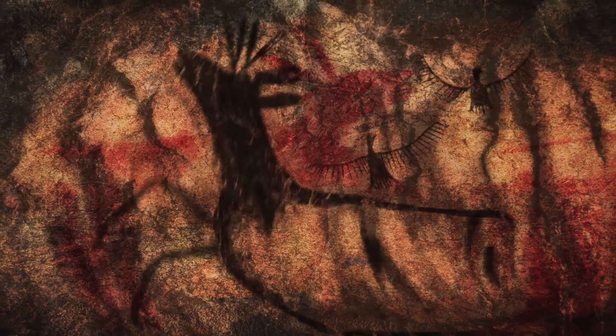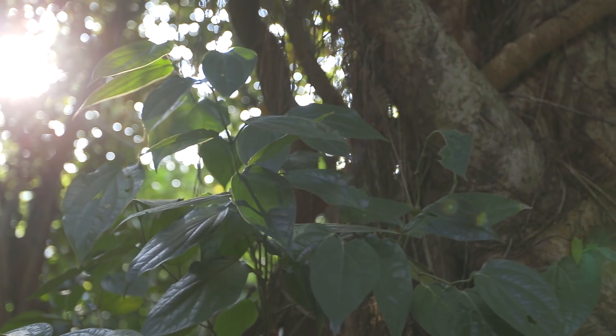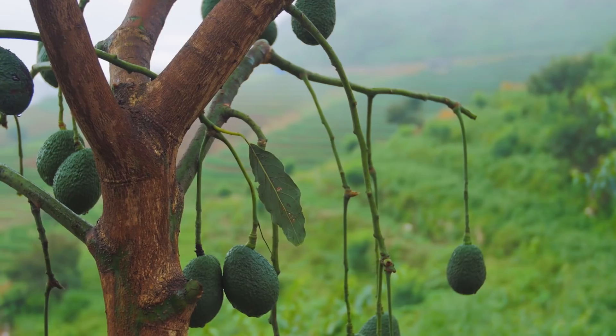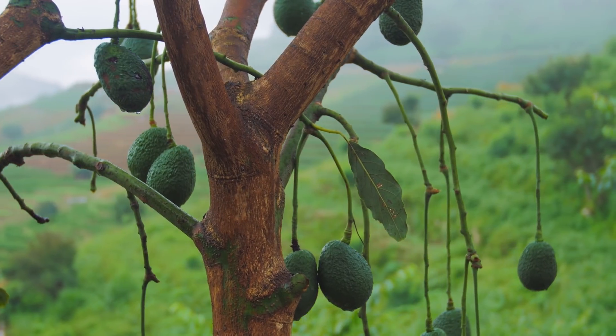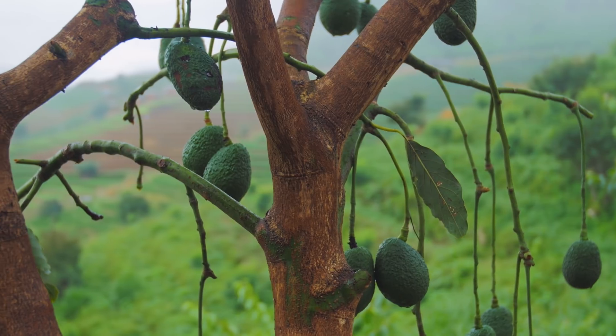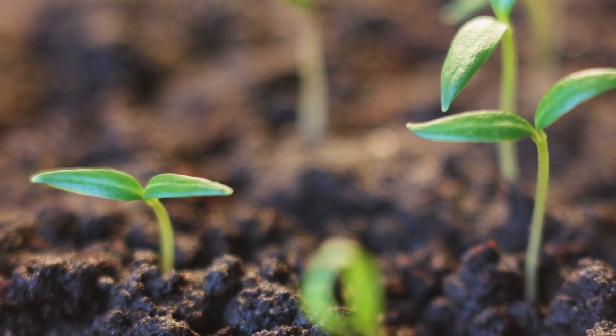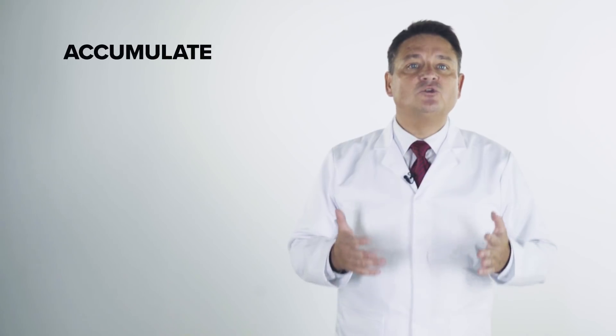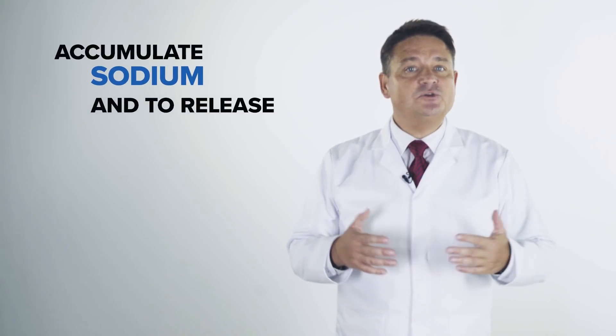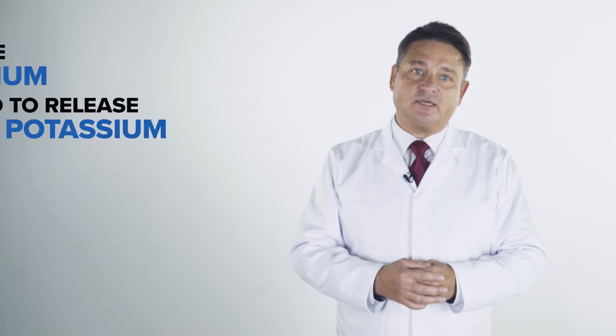Our ancestors had no access to relevant amounts of sodium in the form of table salt. Before the invention of cooked food, the average diet consisted mostly of plant-based, fresh and raw foods. They are extremely high in potassium and very low in sodium. That is, sodium was very scarce and precious, while potassium was freely and abundantly available at all times. This is the reason our bodies have been optimized to accumulate sodium and to release potassium liberally when under stress.